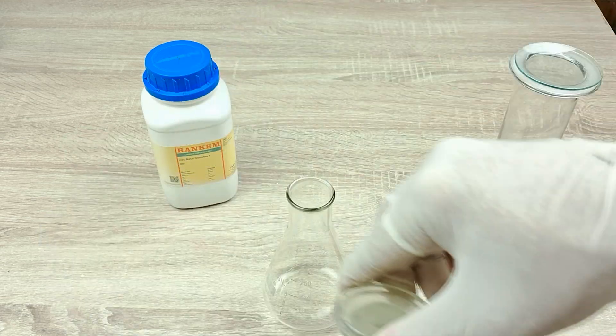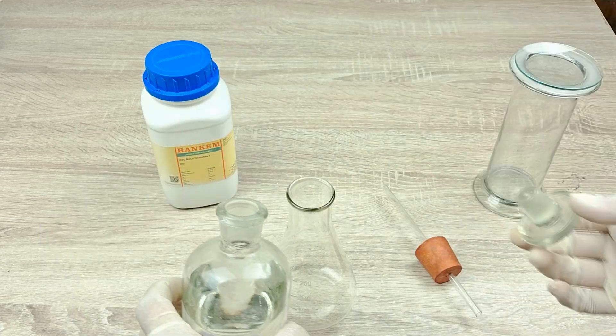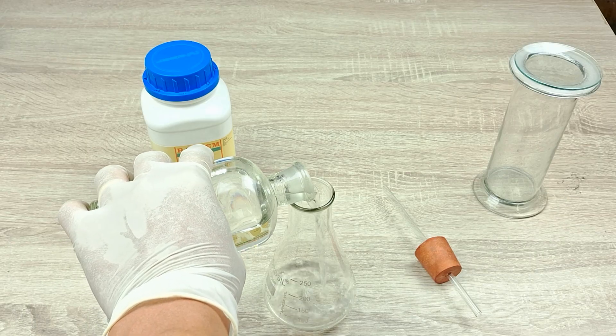Introduce about 50 to 100 ml of dilute hydrochloric acid or dilute sulfuric acid into the flask.